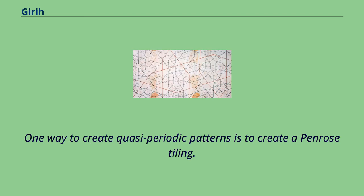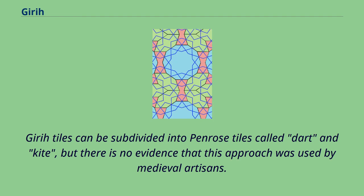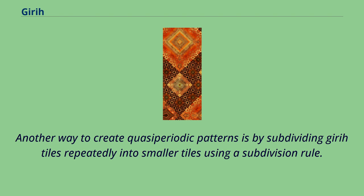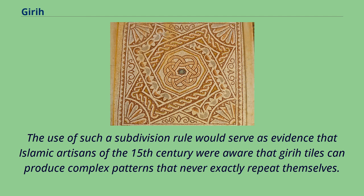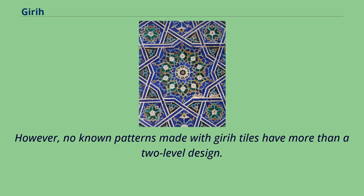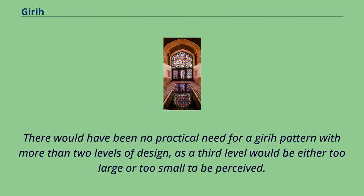One way to create quasi-periodic patterns is to create a Penrose tiling. Girih tiles can be subdivided into Penrose tiles called dart and kite, but there is no evidence that this approach was used by medieval artisans. Another way is by subdividing girih tiles repeatedly into smaller tiles using a subdivision rule; in the limit, the plane would be divided into girih tiles that repeat with frequencies that are aperiodic. No known patterns made with girih tiles have more than a two-level design, and there would have been no practical need for more, as a third level would be either too large or too small to be perceived.